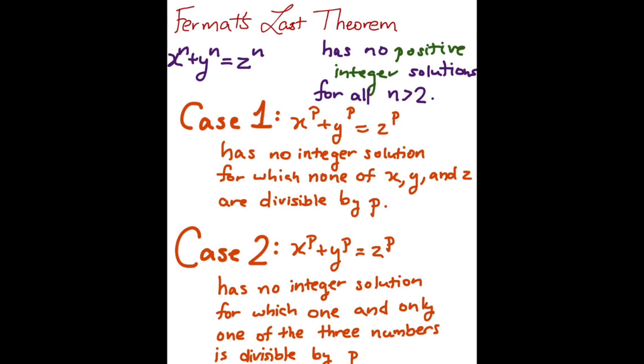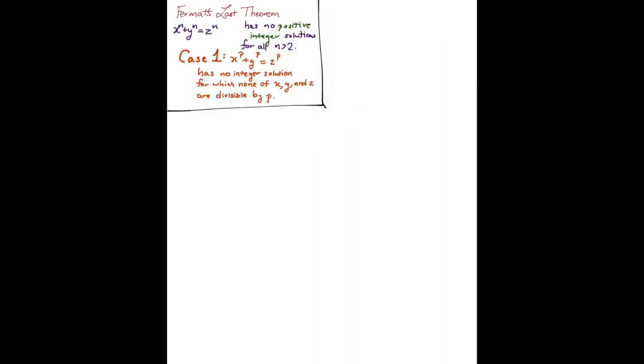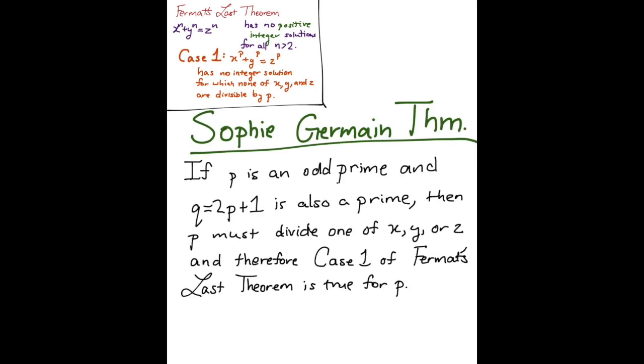So these two cases could prove Fermat's Last Theorem. Germain focused her efforts on Case 1. Her theorem is most commonly stated as follows: If p is an odd prime and q equals 2p plus 1 is also prime, then p must divide one of x, y, or z, and therefore Case 1 of Fermat's Last Theorem is true for p.